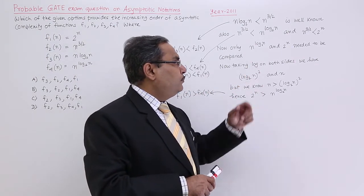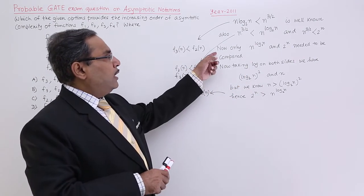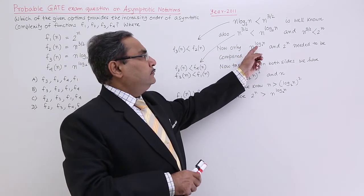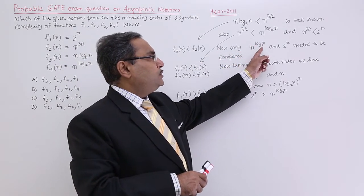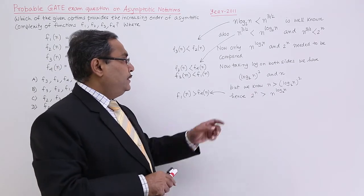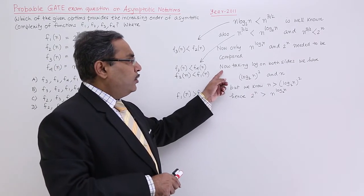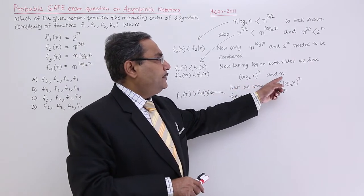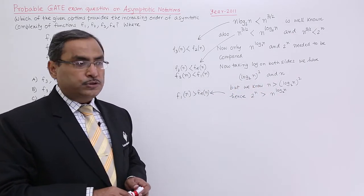Now taking log on both sides. Now only n to the power of log n to the base 2 and 2 to the power of n needed to be computed. That is my f1 and f4. Taking log on both sides, we are having this and that.